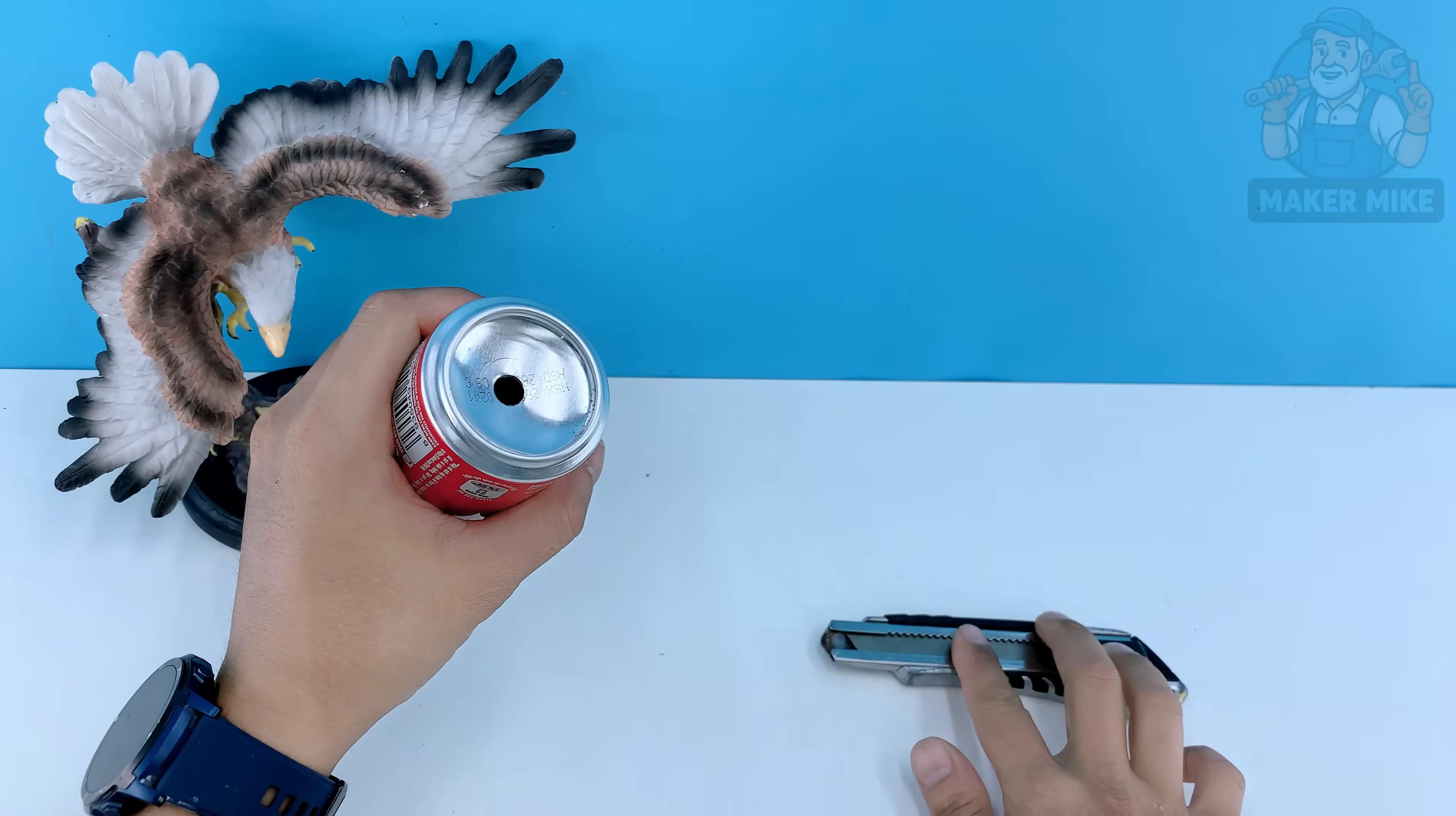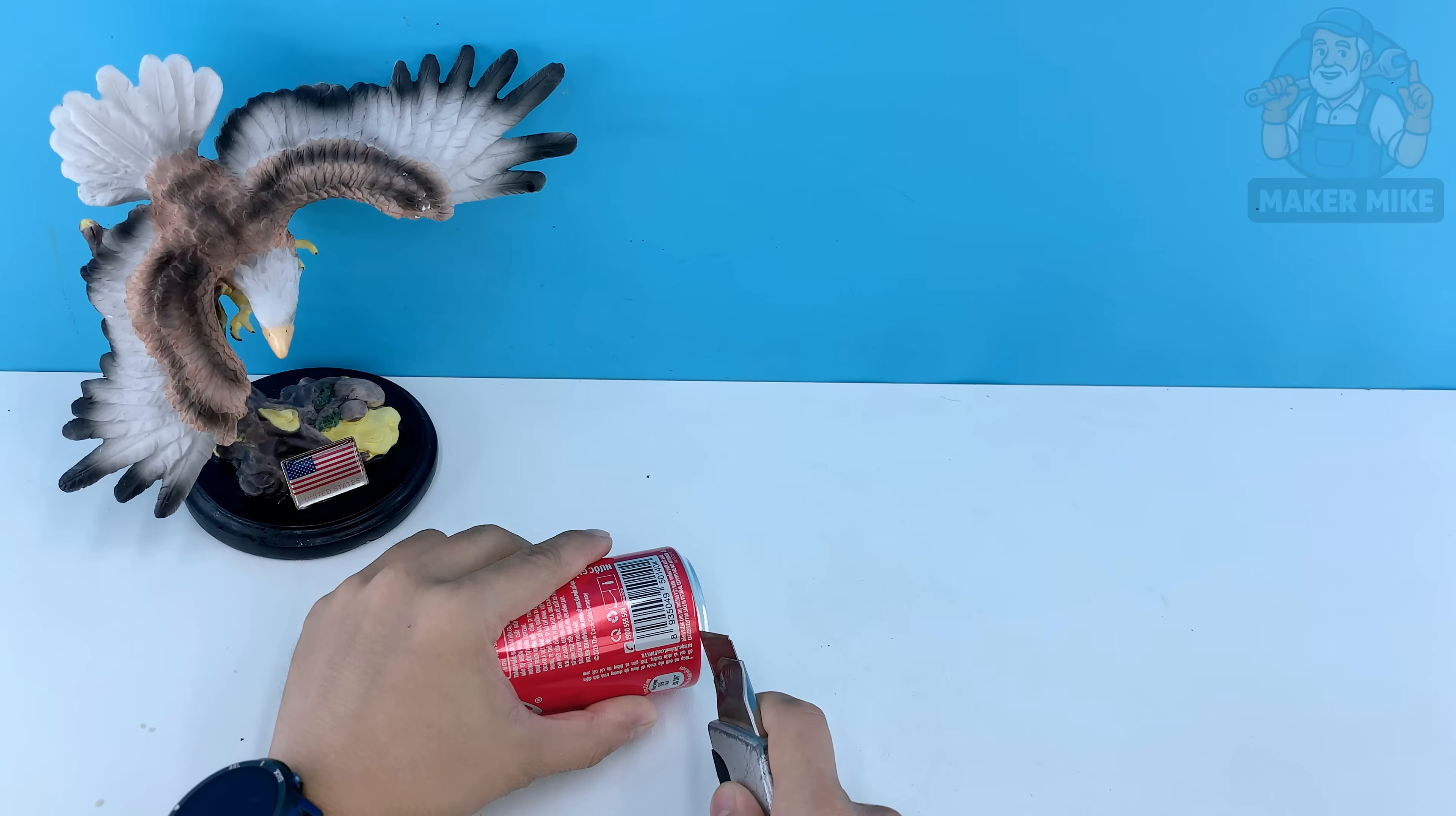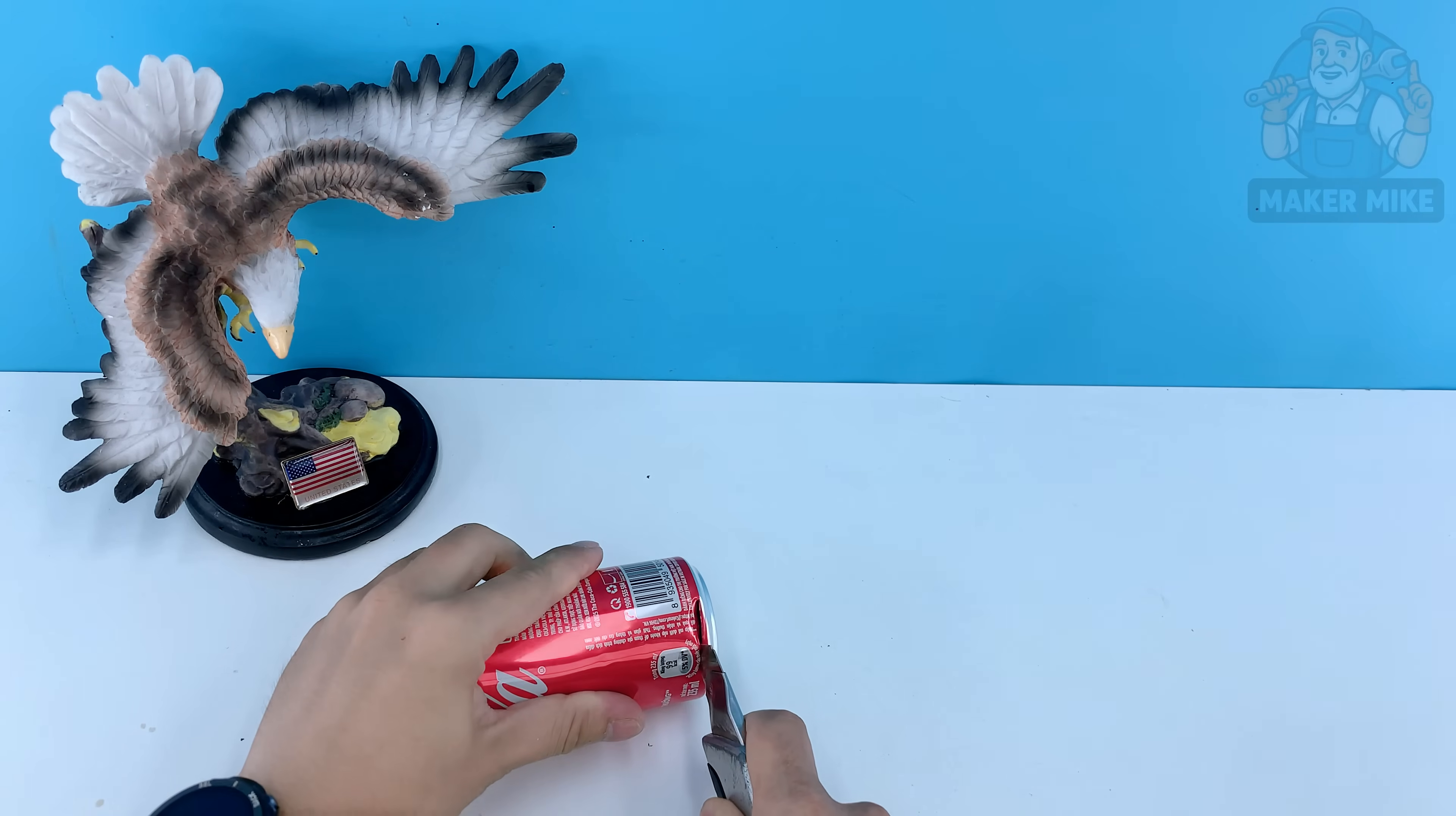Now using a sharp utility knife or a fine hacksaw, carefully cut just above the curve at the bottom. Take your time here, the aluminum is thin and you want a clean even edge.